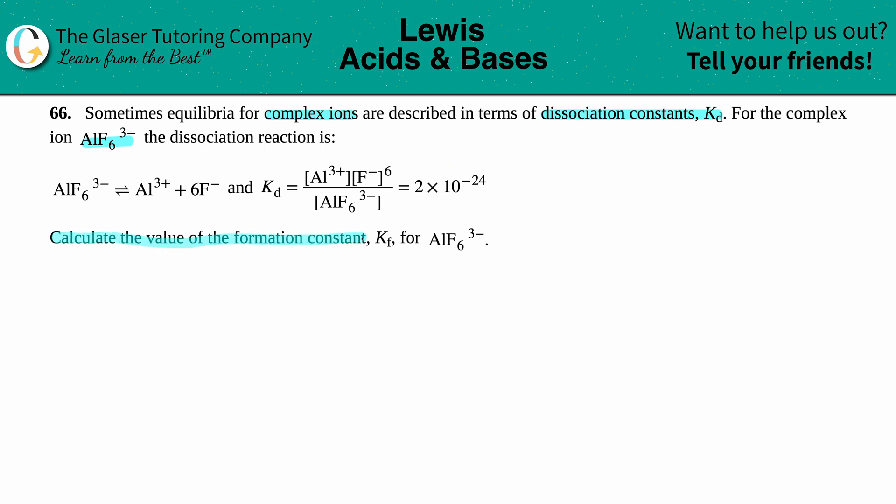Well, just know that your Kd looks like we're taking our complex ion and breaking it down. On the flip side, if we are literally forming it with a formation constant Kf, we have to form or make the complex ion. So in essence, dissociation (aka breaking down into ions) is the reverse of formation.